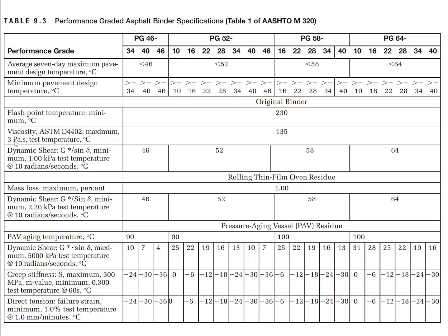The dynamic shear rheometer test is also performed on the original, unaged binder — this requirement is in the specification system, though it may not be mentioned in some textbooks. This test is performed at the maximum temperature for each grade, and the rutting parameter should be larger than 1.0 kPa.